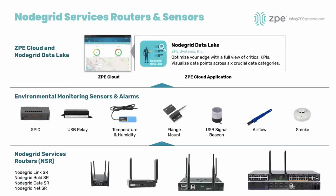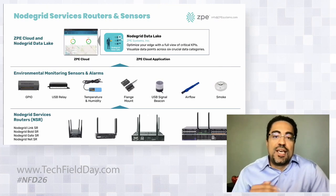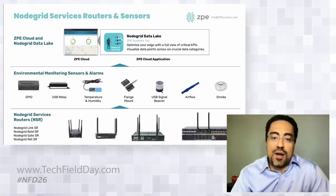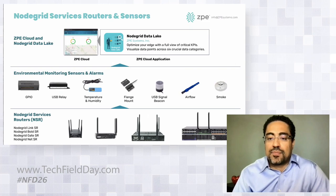Building this stack from the bottom up, the different hardware includes NodeGrid service routers from a very small one called the Link all the way to a modular one, the NetSR. All different sensors shown previously also work with the service router series. They are all managed by ZPE Cloud, they send data to NodeGrid Data Lake, and on top of that, applications pull data from the Data Lake and display user experience monitoring and environmental monitoring.